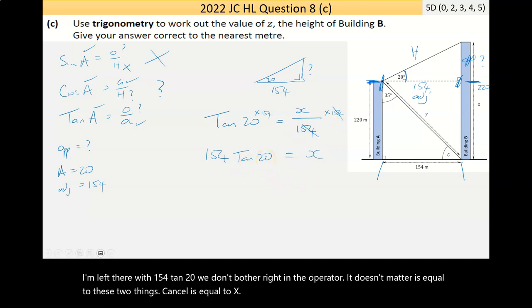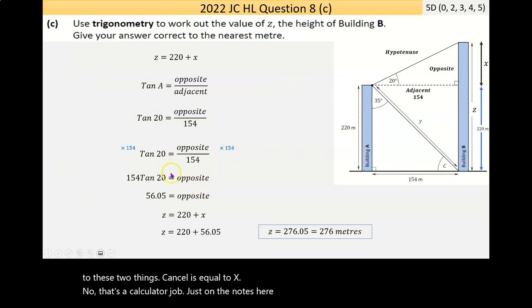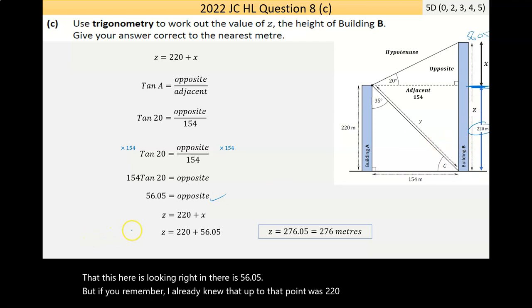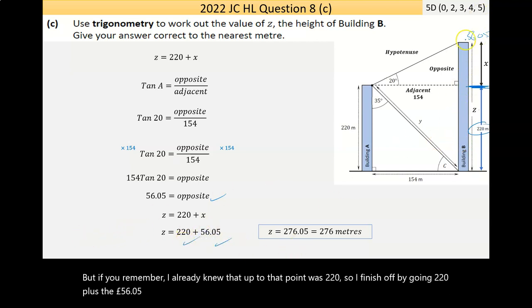Now, that's a calculator job. Just on the notes here, I found that 154 times tan 20 is equal to 56.05. So, I know that this here is 56.05. But if you remember, I already knew that up to that point was 220. So, I finish off by going 220 plus the 56.05 is the total height of building B. And I got 276.05. The question says round to the nearest metre. That's 276 metres.